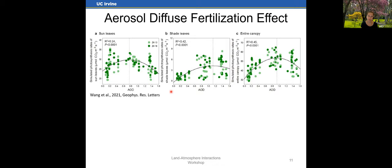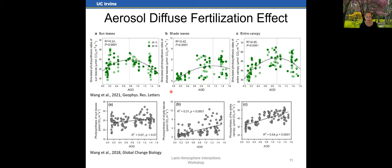For example, for aspen, a very different trend is observed where there's no threshold in the aerosol diffuse fertilization effect. The shade leaves still show a stronger aerosol diffuse fertilization effect than the sun leaves, but there is no threshold. This demonstrates that canopy complexity can play a role in the importance of the aerosol diffuse fertilization effect.